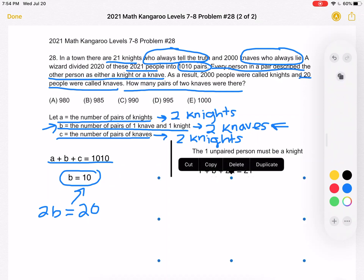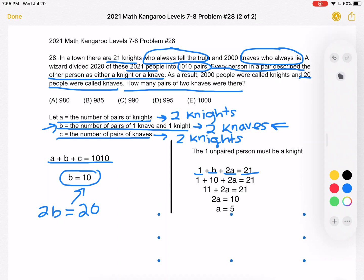So 21 is the total number of knights, and that's equal to that one leftover person who's unpaired, plus B (because each pair B only has one knight), plus 2A (because each pair of type A is going to have two knights). We know what B is, so we can substitute 10 for B, and we get 1 plus 10 plus 2A equals 21. Then we combine to get 11 plus 2A equals 21. Subtract 11 from both sides to get 2A equals 10. And finally, A equals 5. There's five pairs of knights.